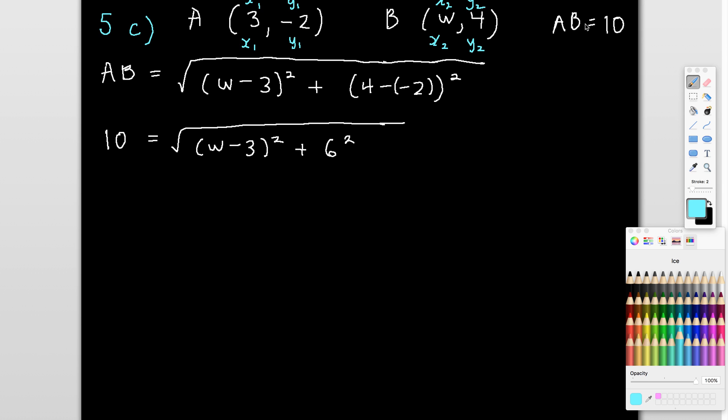So to start this one off, what I would do is I would write my formula for AB, which is the square root of x2 minus x1 plus y2 minus y1, as you can see. And there, they're both squared. Then what I would do is I would substitute the value for AB, which is 10, into that rule. What I've done here is I've just evaluated. So I've done 4 plus 2 is 6. So this would be 6 squared. From here, what I'm actually needing to find is w. I need to know what this x value is for the b coordinate. So what I've got is an equation now that I need to solve.